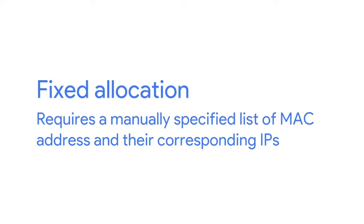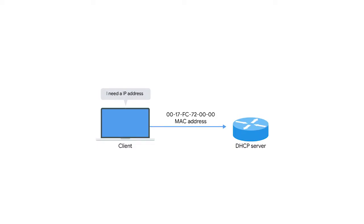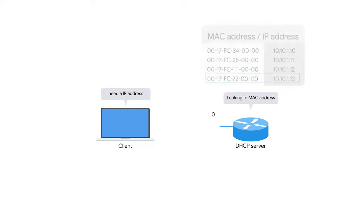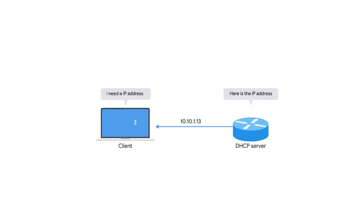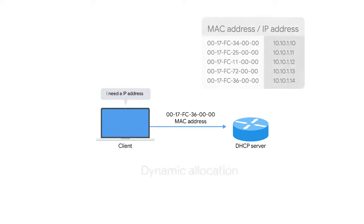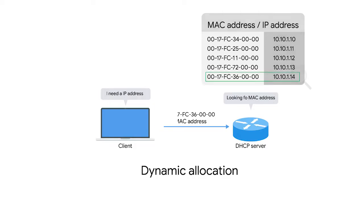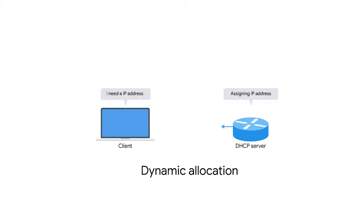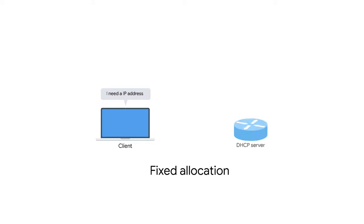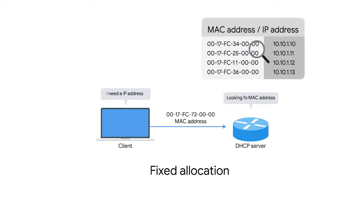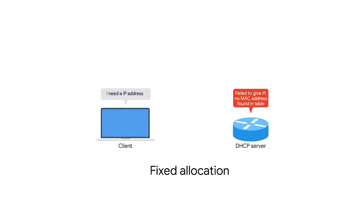Finally, there's fixed allocation, which requires a manually specified list of MAC addresses and their corresponding IPs. When a computer requests an IP, the DHCP server looks for its MAC address in a table and assigns the IP that corresponds to that MAC address. If the MAC address isn't found, the DHCP server might fall back to automatic or dynamic allocation, or it might refuse to assign an IP altogether — acting as a security measure so only pre-configured devices can communicate on the network.